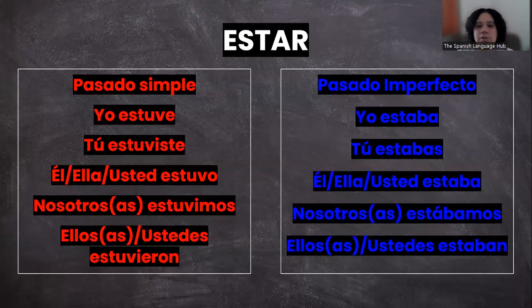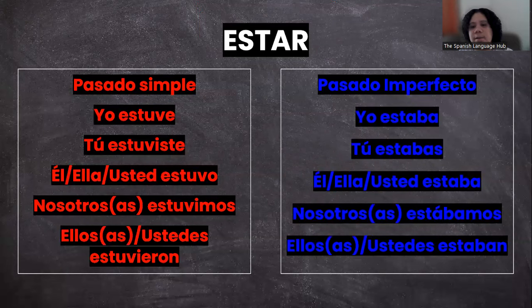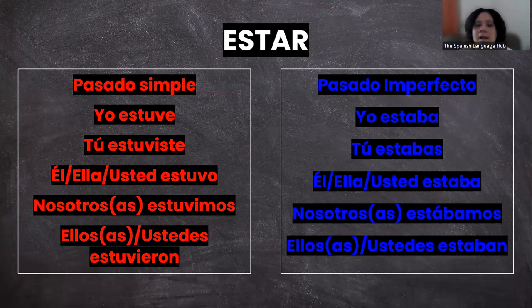En pasado imperfecto: yo estaba, tú estabas, él/ella/usted estaba, nosotros/nosotras estábamos, ellos/ellas/ustedes estaban.